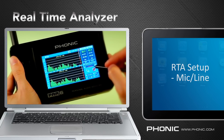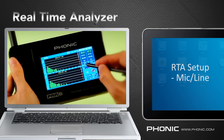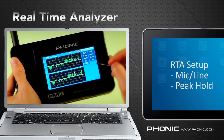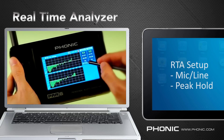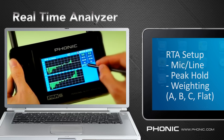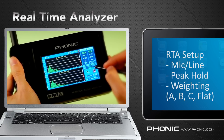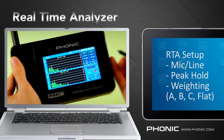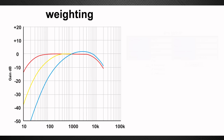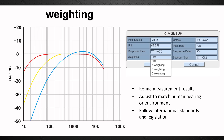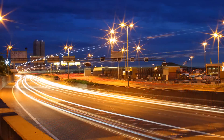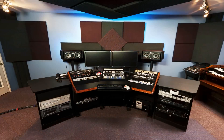You can select whether you want to use microphone or line input, whether there's a peak hold time, and most importantly you can select the weighting. There is A, B, C and flat weighting available. To understand weighting you need to understand that human hearing has a particular frequency curve and that some frequencies we can hear better than others. The weighting helps the analyzer understand this and provide us with results relevant to our hearing range.